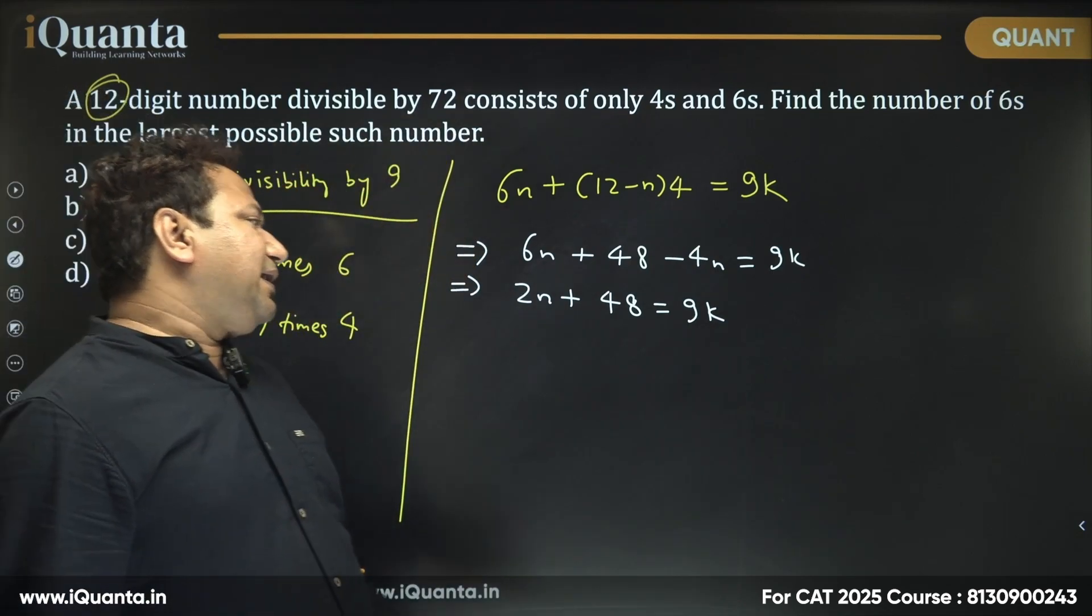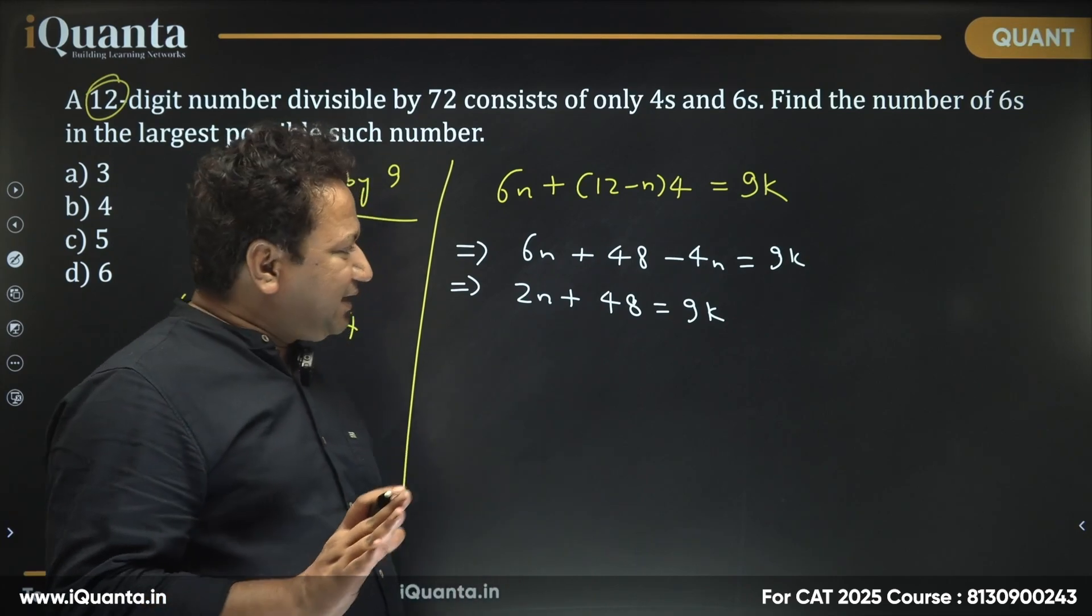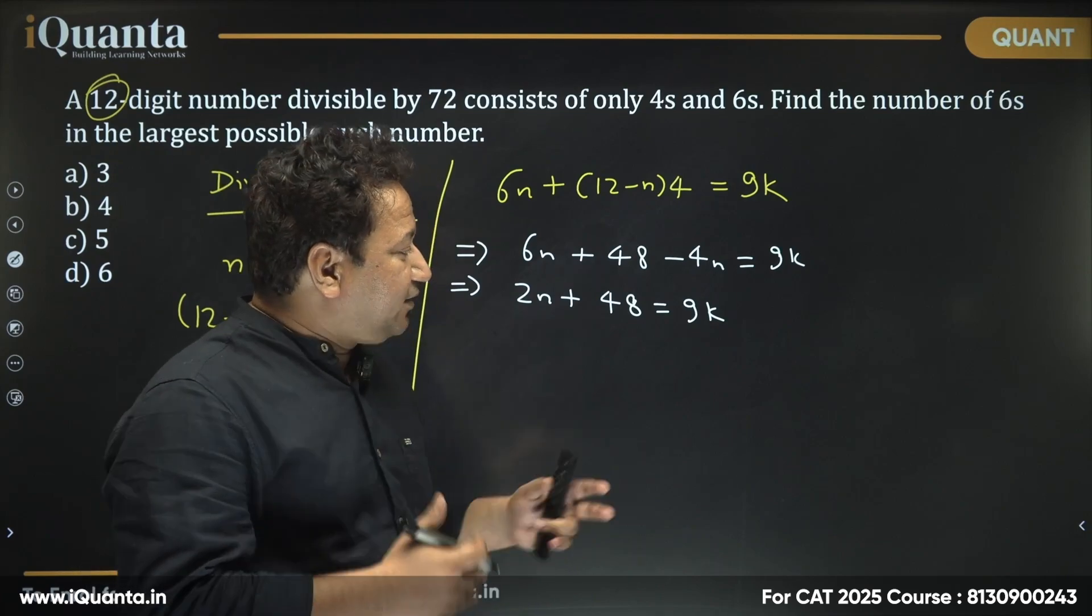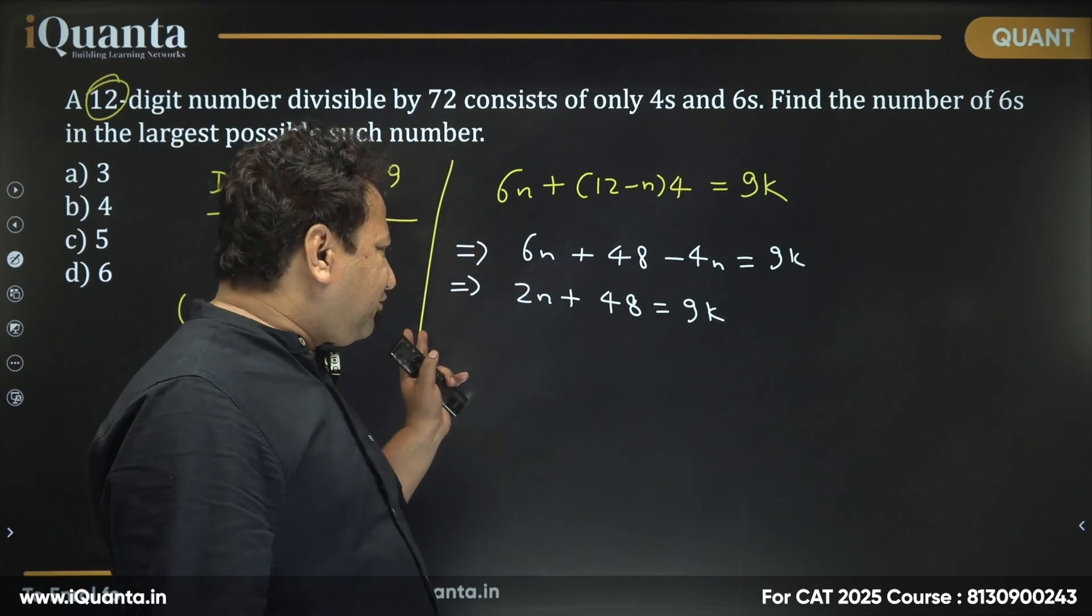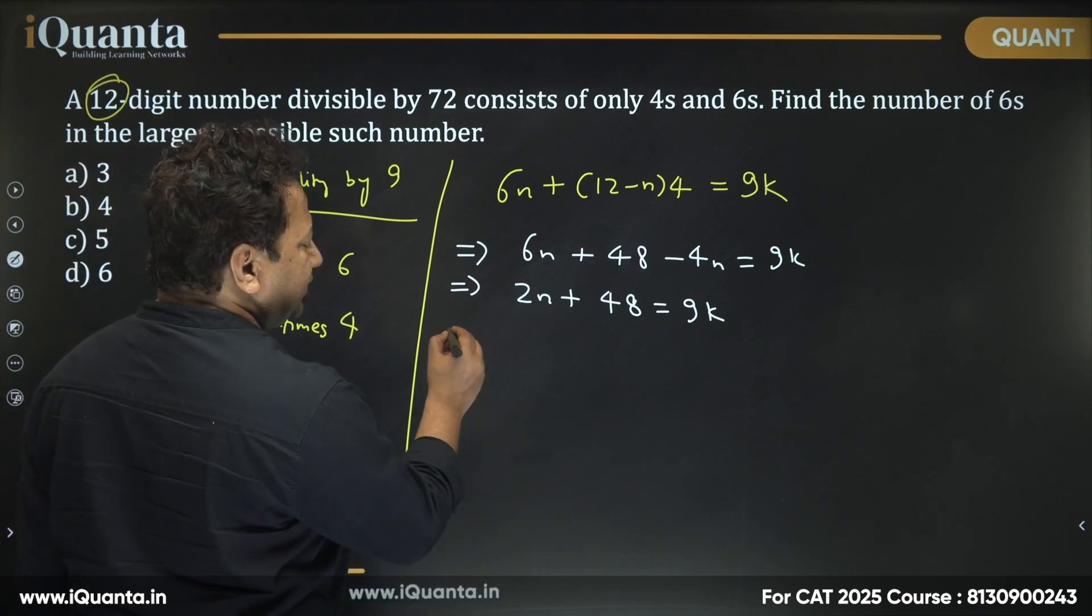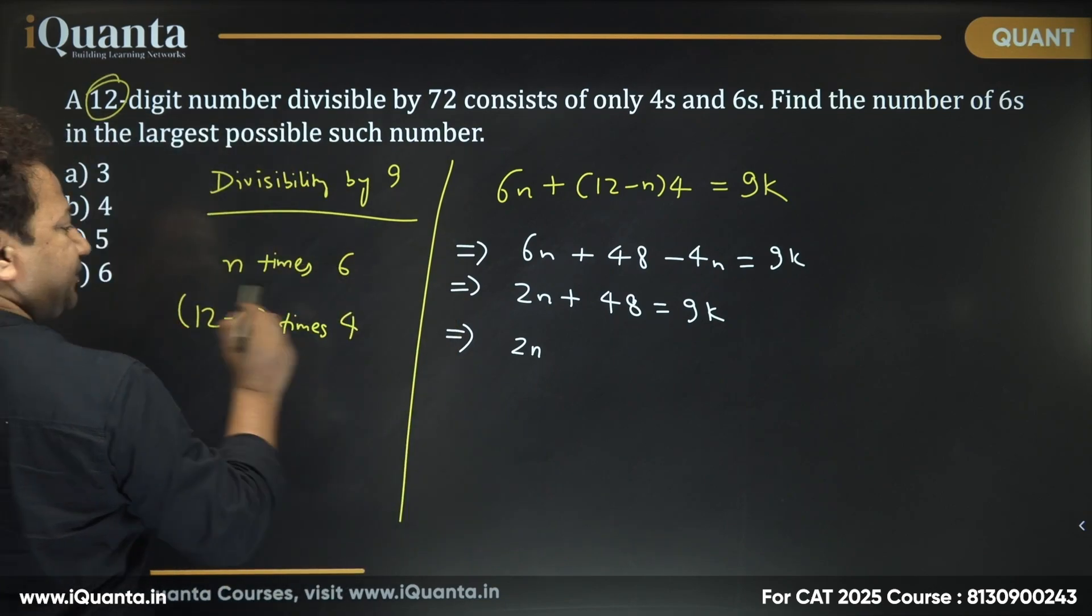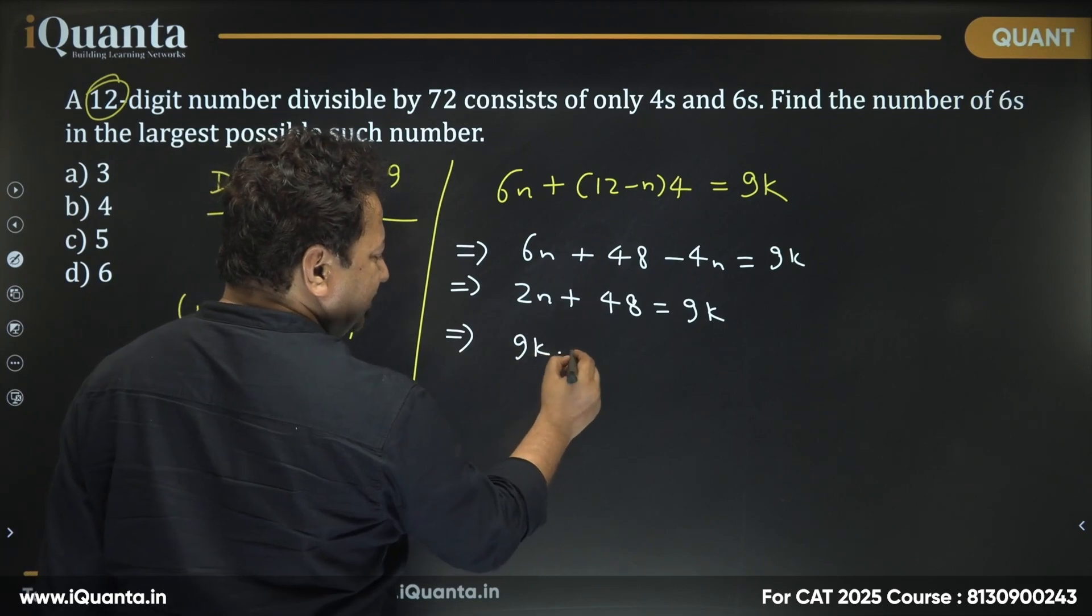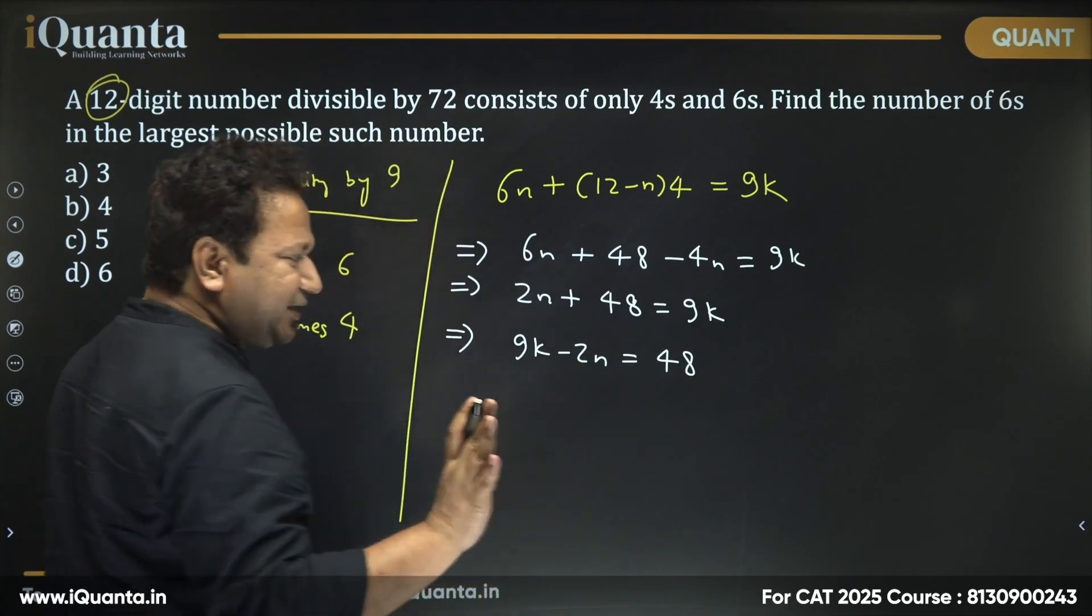Now we'll solve for it. If I open the bracket, what do I get? 6n plus 48 minus 4n is equal to 9k. Which gives us 2n plus 48 should be a multiple of 9. That is 9k. Let me have all the variables in one place like 9k minus 2n, sending 2n to the right hand side. And then reversing is 48. We have two variables in just one equation.